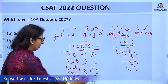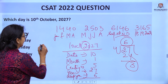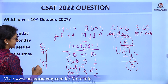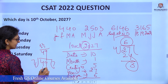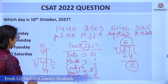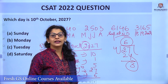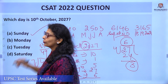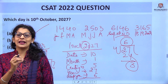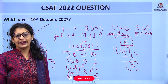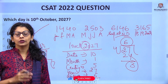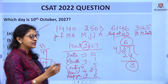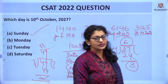Continuing: 22 + 27 = 49. Dividing 49 by 7: 7 sevens are 49, so remainder is 0. When remainder is 0, it means Sunday. Remainder 1 = Monday, 2 = Tuesday, 3 = Wednesday, 4 = Thursday, 5 = Friday, 6 = Saturday, 0 = Sunday.